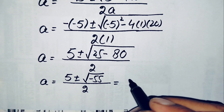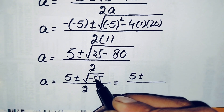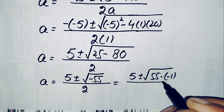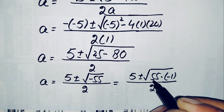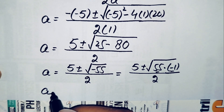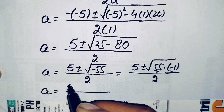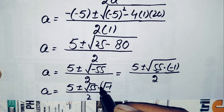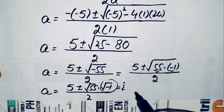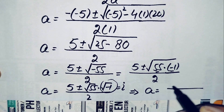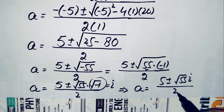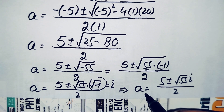We can further write square root of negative 55 as square root of 55 times negative 1, which separates into square root of 55 times square root of negative 1. Since square root of negative 1 is the complex identity i, this becomes a equals 5 plus or minus square root of 55 times i, divided by 2. Both values of a here are complex numbers.